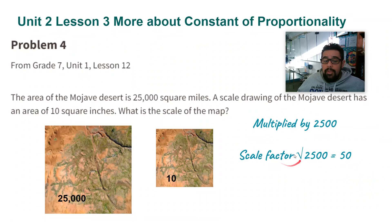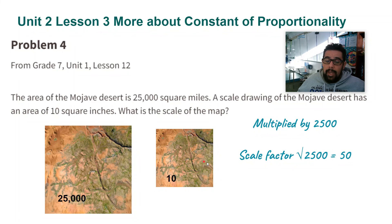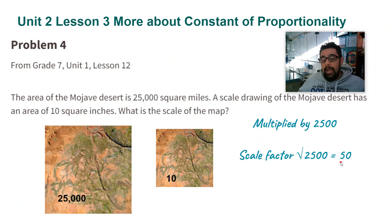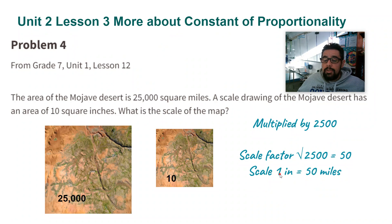For the scale of the map, I take the number of inches on the drawing and multiply it by 50. That tells me the number of miles. So my scale is 1 inch equals 50 miles. Thank you, ladies and gentlemen.